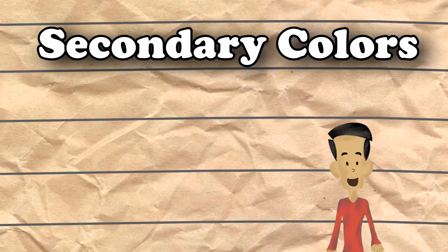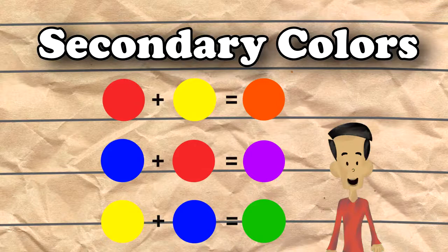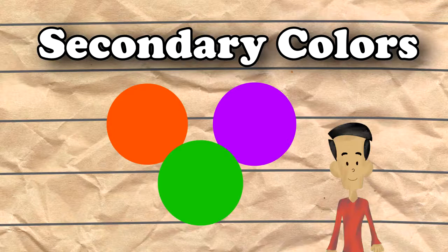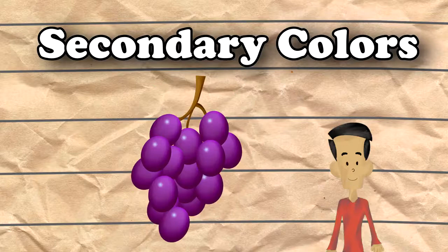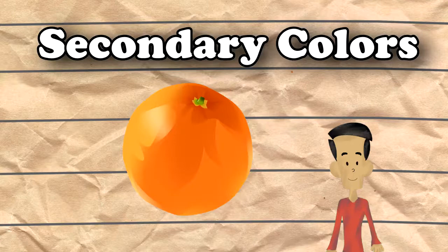The secondary colors are orange, purple, and green. Let us see an example of each secondary color. An example of purple is grapes. An example of orange is the orange fruit. An example of green is a watermelon.